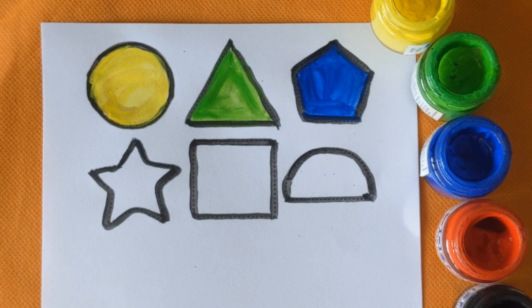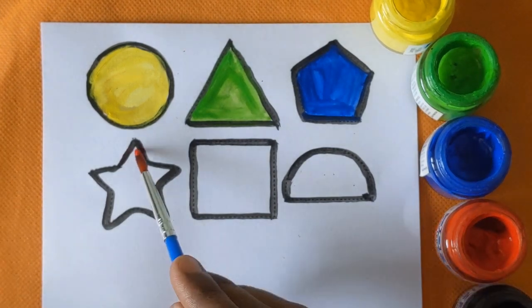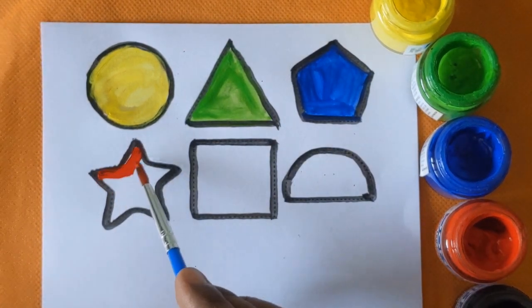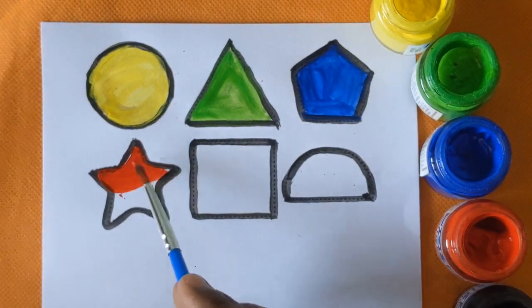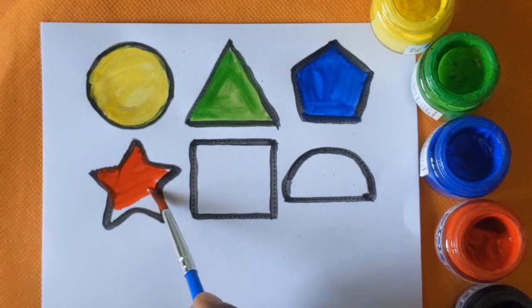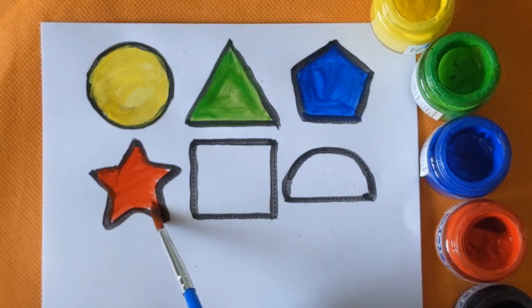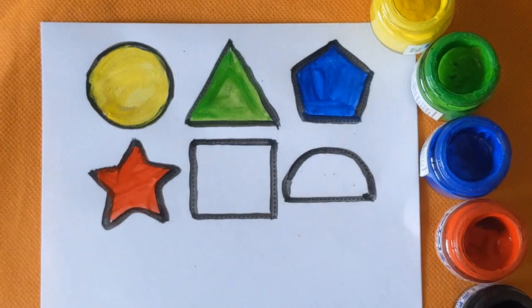Next shape is star. Star with a red color. This is star shape. Red color.